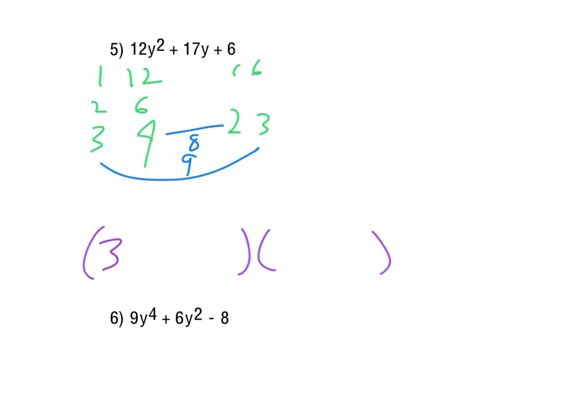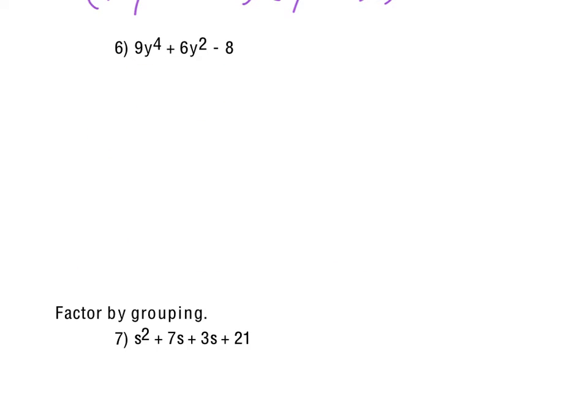So again, the 3 and the 4 are the y's, and then the 2 and the 3 are the plain numbers. And again, the 3 multiplies the 3, so that means that this 3 goes here, and then the 2 goes there. So 3y plus 2 times 4y plus 3. Alright, for number 6, notice we've got a 9y to the 4th plus 6y² minus 8. So the degrees are a little bit higher. It's not a special pattern,